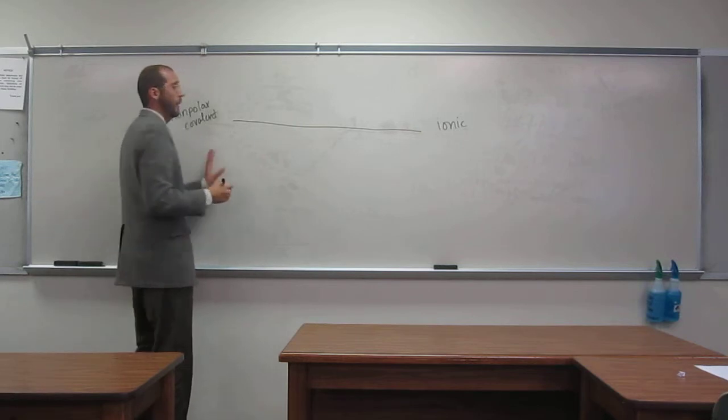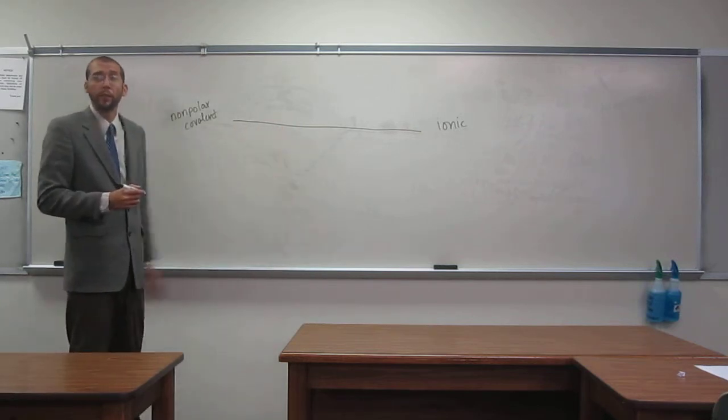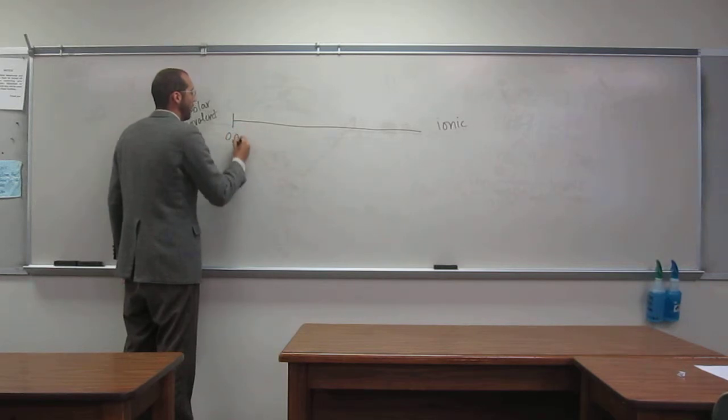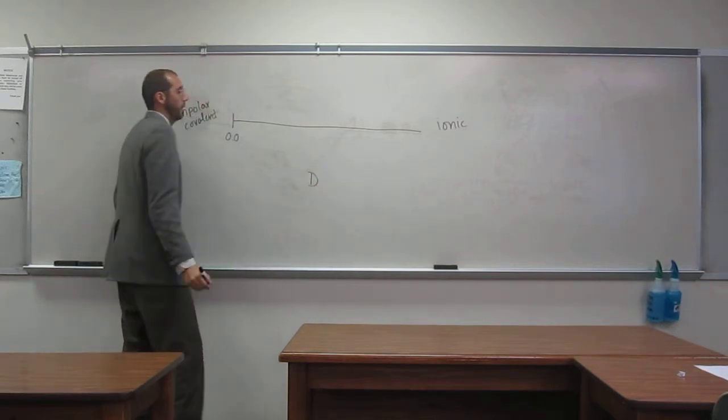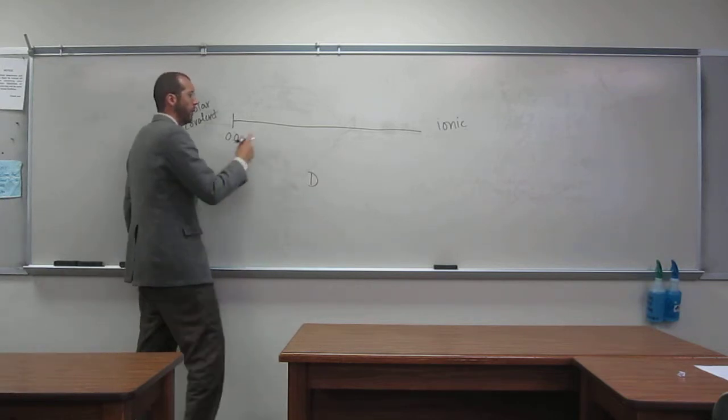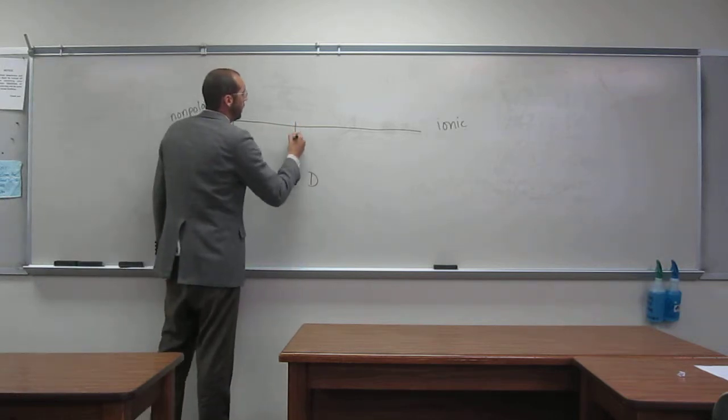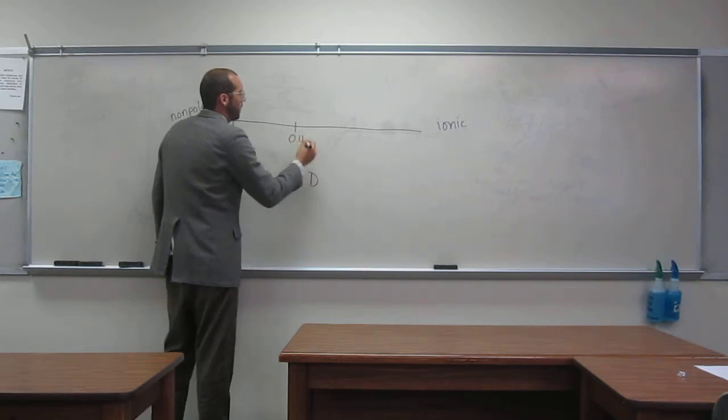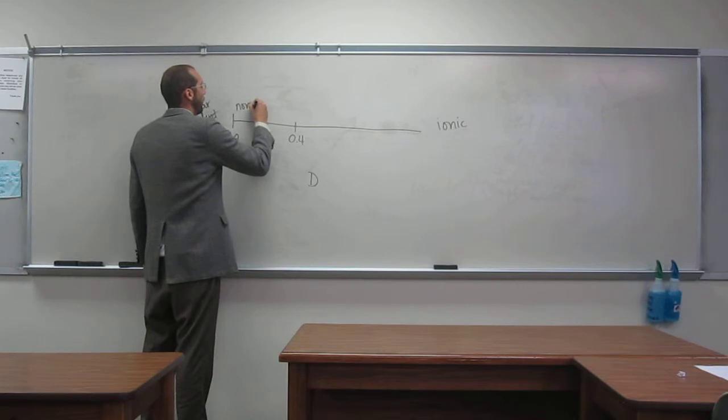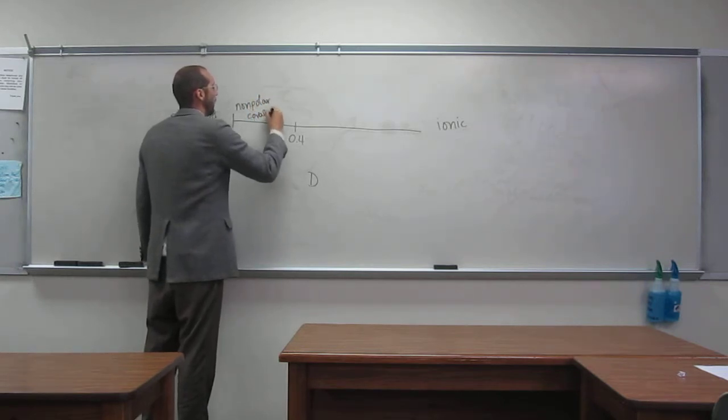What we'll find is that there's a spectrum of different types of bonds. At 0.0, and this is all in Debye units of electronegativity, so 0.0 to about 0.4 Debye, all of these are your nonpolar covalent bonds.